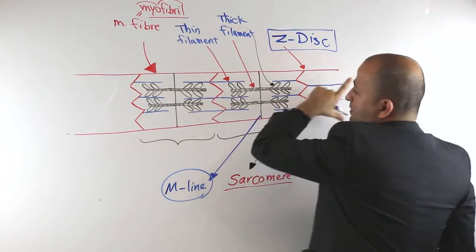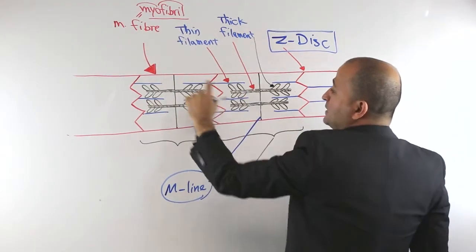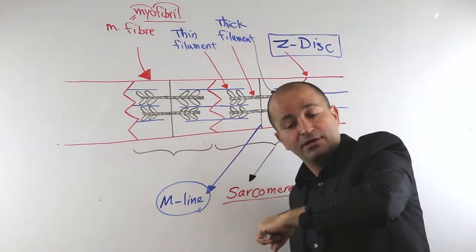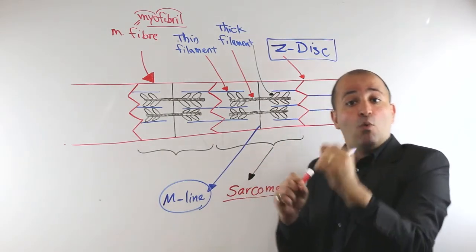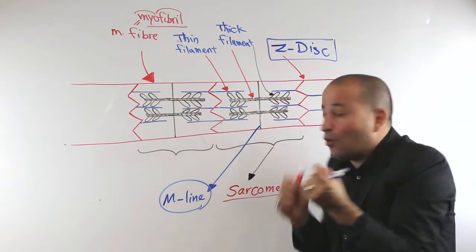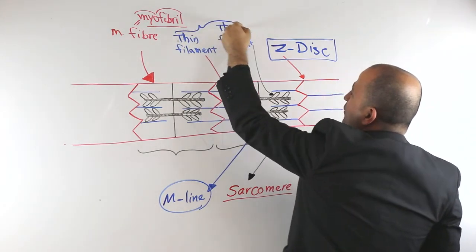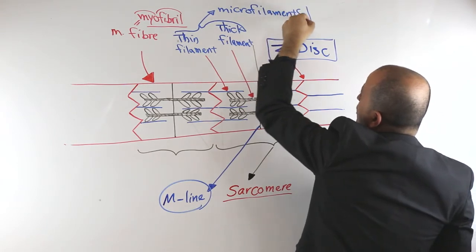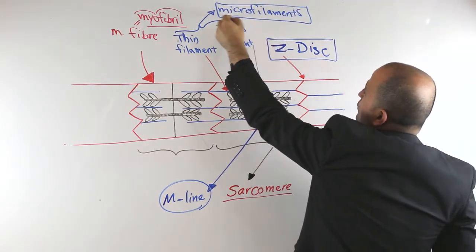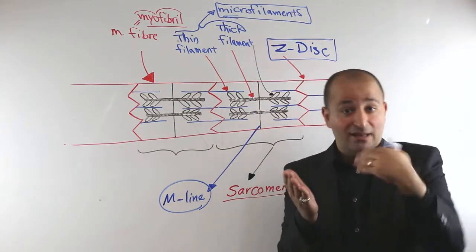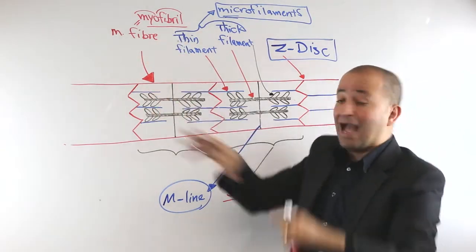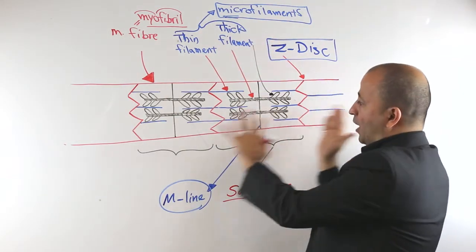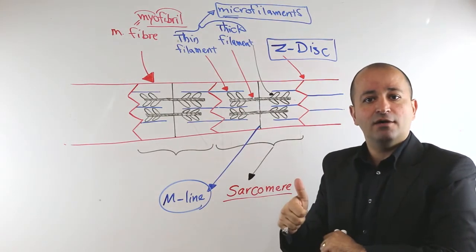We call the whole muscle fiber a myofibril. But the filaments inside the muscle fiber — the thin and thick filaments — are smaller, so we call them microfibrils or microfilaments. So: myofibril refers to the actual whole muscle fiber, while microfibril or microfilament refers to the thin and thick filaments inside it. Anytime you see the word 'micro,' they are talking about the thin and thick filaments.